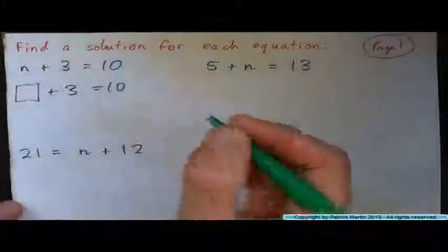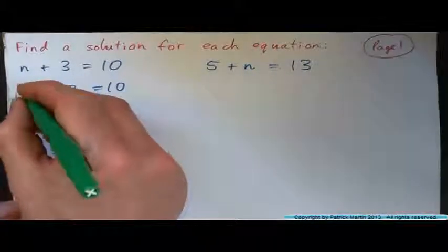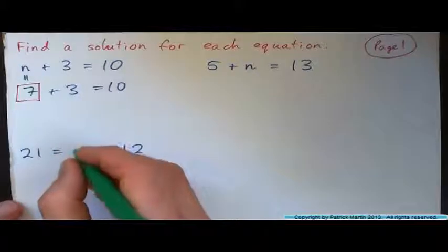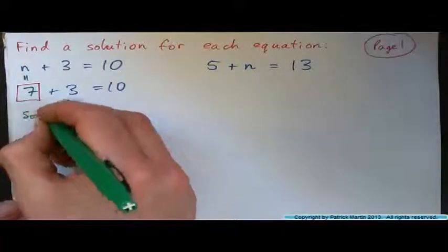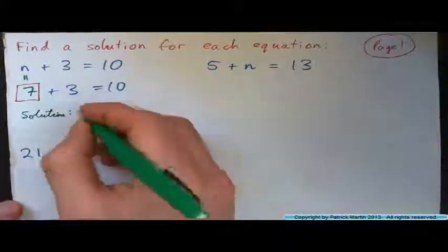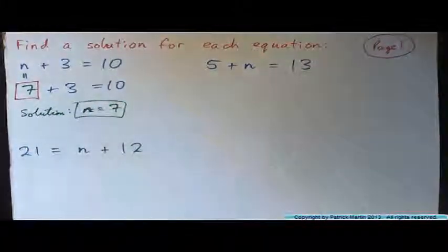You would stick in the number seven, right, because seven and three is ten, so n is seven. So the solution to the equation is that n equals seven. The unknown number is seven to write the whole thing in.